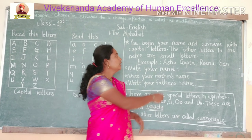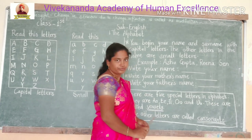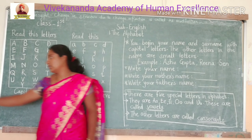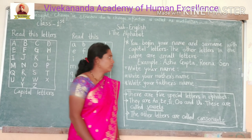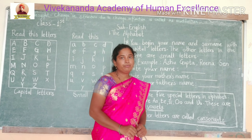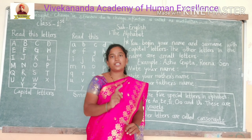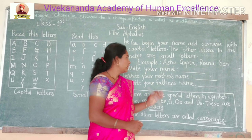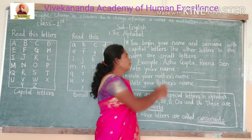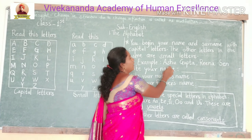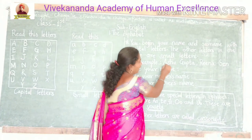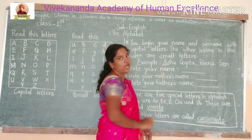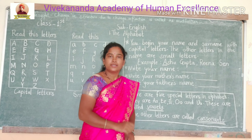Here is a given example: Ashu Gupta. In the spelling Ashu, A is written in the capital letter, and all the other letters are written in small letters.